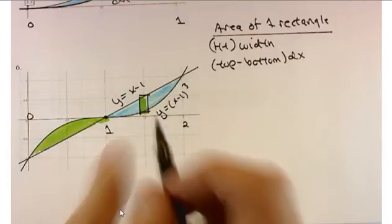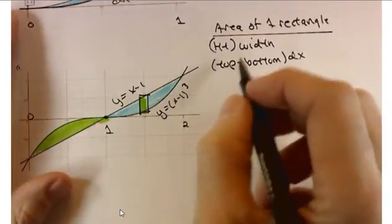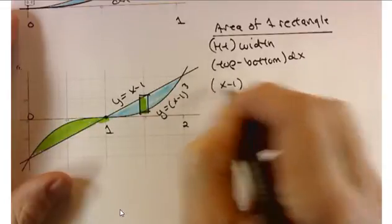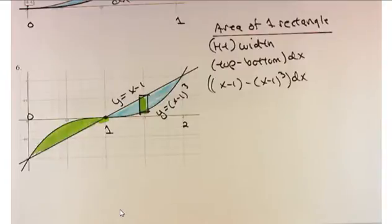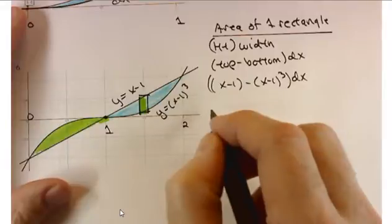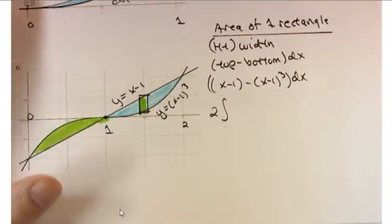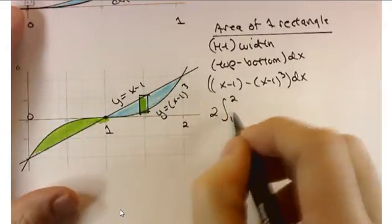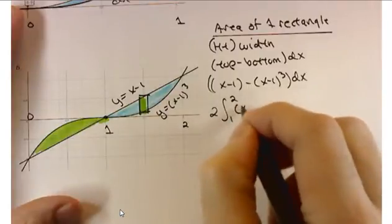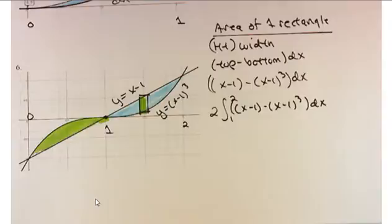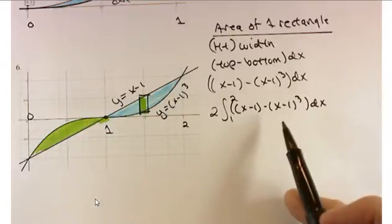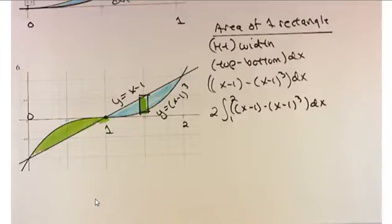Let's set up the area of one rectangle on the right side: (x minus 1) minus (x minus 1) cubed dx. As far as the integral is concerned, we'll integrate from 1 to 2 and double it to account for both areas. That gives twice the integral from 1 to 2 of (x minus 1) minus (x minus 1) cubed dx.